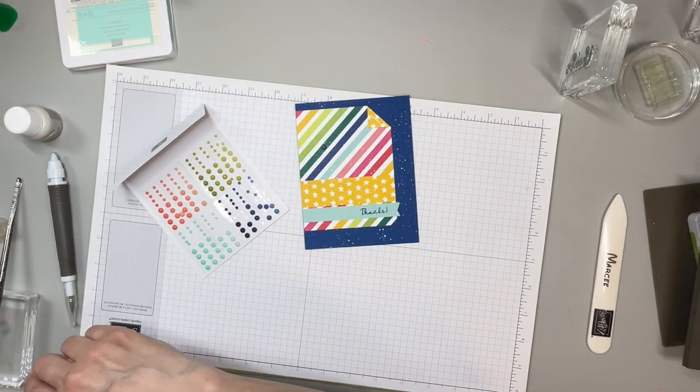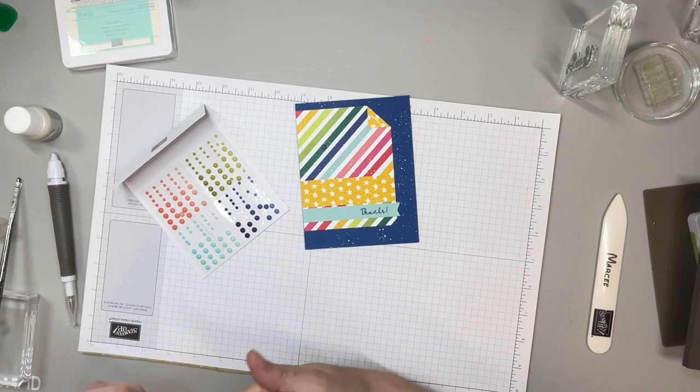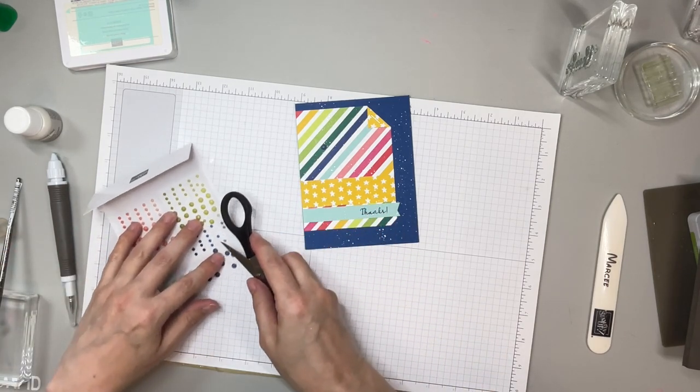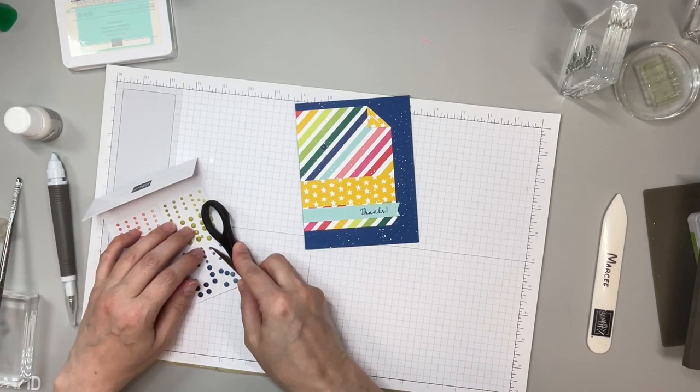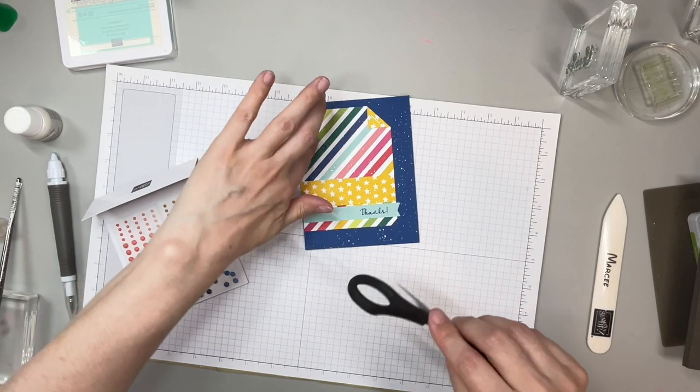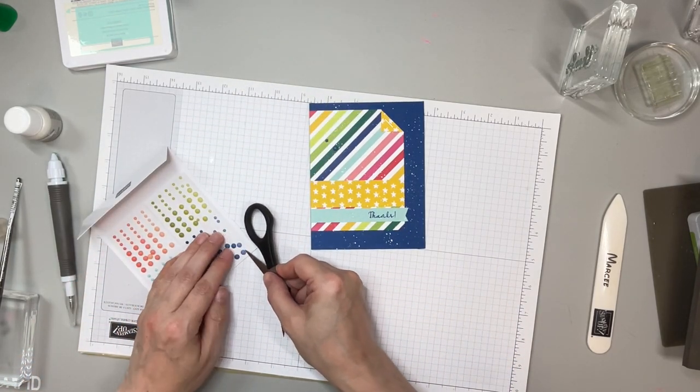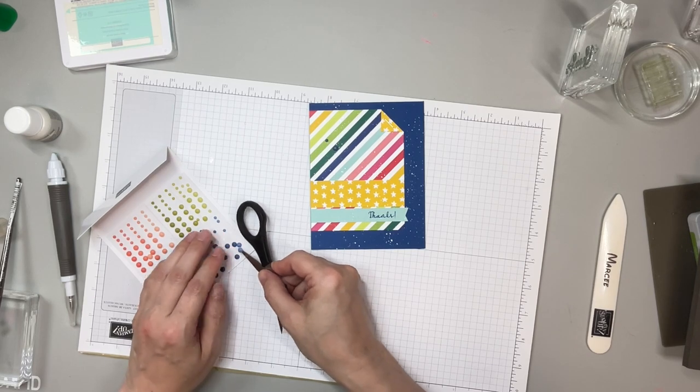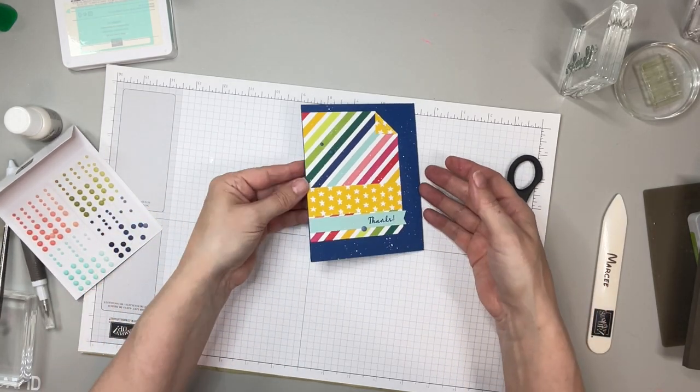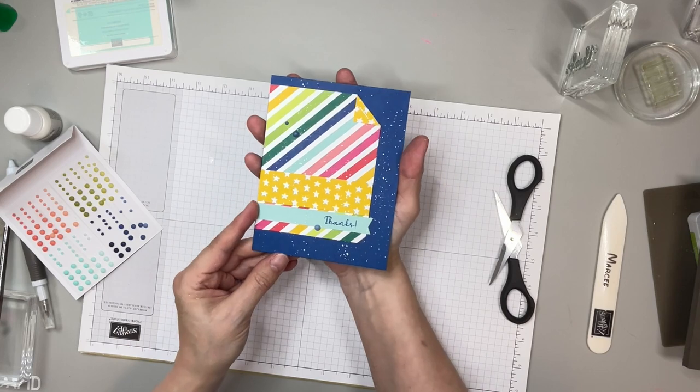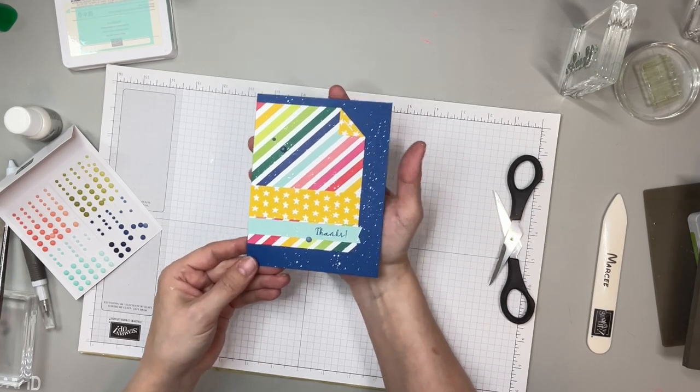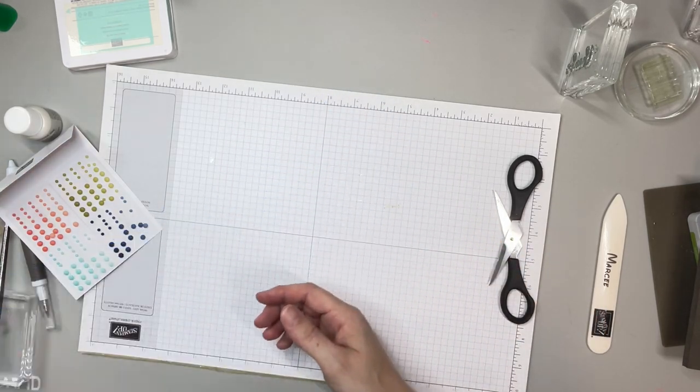So there we have it with the splatter, and then I'm going to bring in these embellishments here. I'm going to use the Night of Navy. I like that they have the different shades. And then one more, which we are going to put down here by the sentiment. We are done with that one, and hopefully you can kind of see the shimmer that that paint gives. I thought that was really fun. I love bright colors.